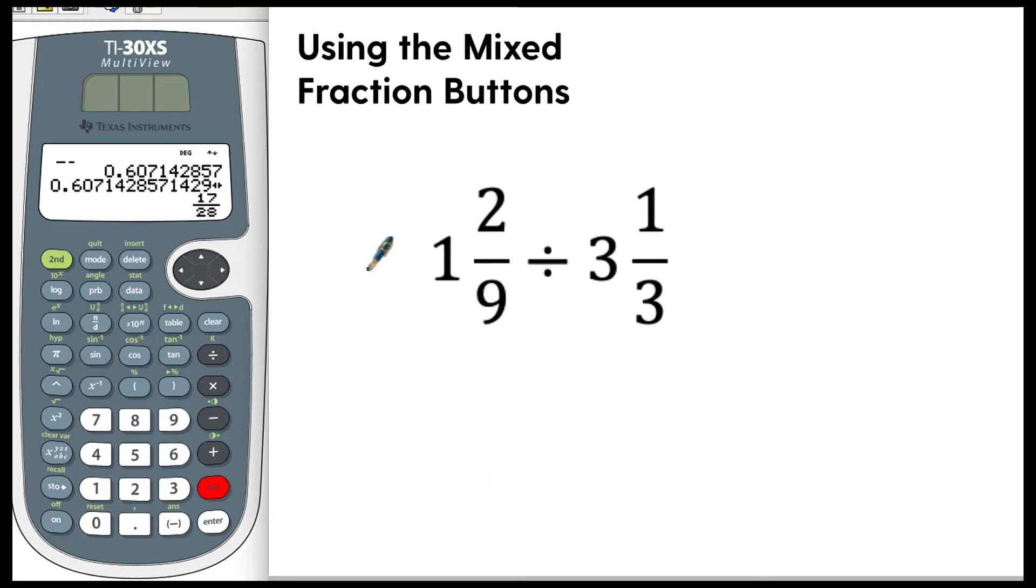Okay next, using mixed fraction buttons. So let's say you get this on the test and you want to be able to enter these in. Well you have this green lettering, you have u n over d that stands for the whole unit and then the fraction part. That's our mixed fraction, that's what we want. So you have to hit the second button first, then you're going to hit the n over d button but now it blinks, there's three different boxes and it's blinking here for the whole number. So we can enter in this 1, arrow over, 2 arrow down, 9 arrow over, and then divided by for our operation, and then second again, n over d, you can see it blinking for the mixed fraction to the right, 1 down and then the 3 arrow over.